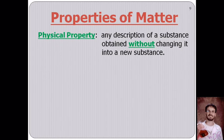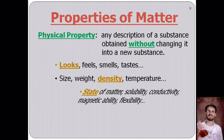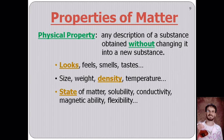Matter can be described by its physical properties, and these are essentially the things that you can sense with your senses — what it looks like, what it feels like. If you can make an observation without actually changing the material into something else, then you're talking about a physical property. Physical properties include size, weight, and density — a really important one, as we learned in the last unit, you can identify objects by their densities.